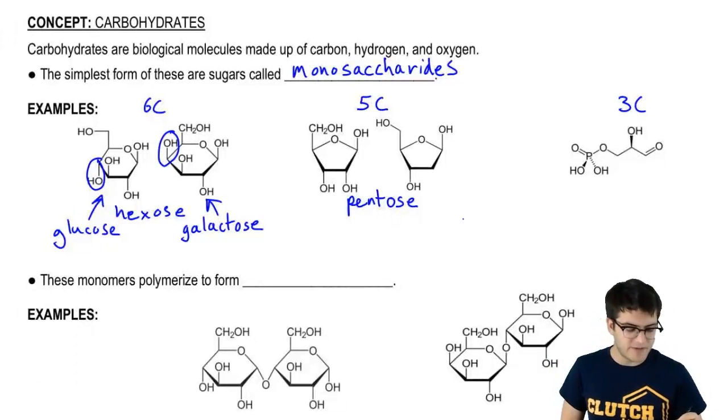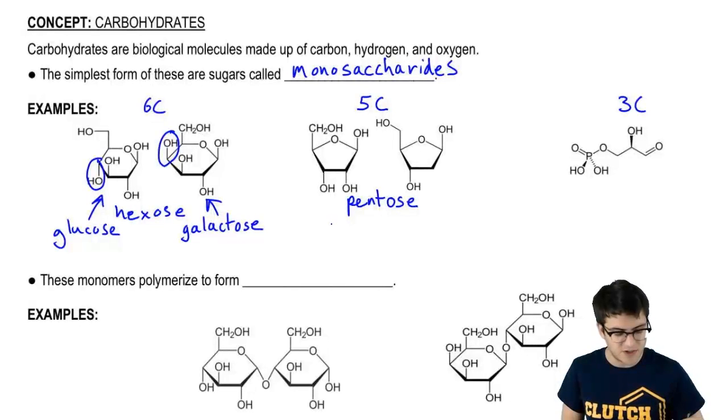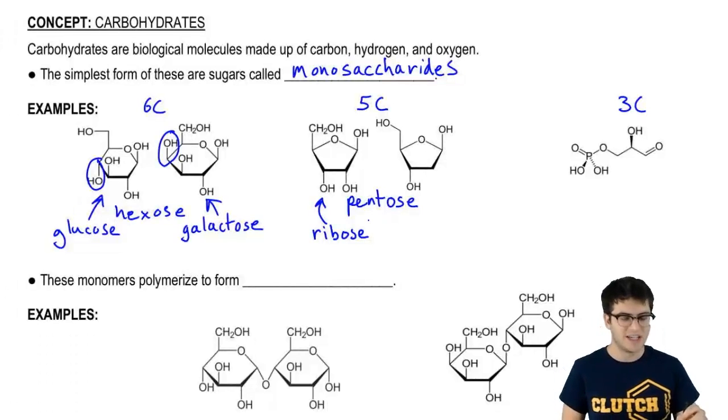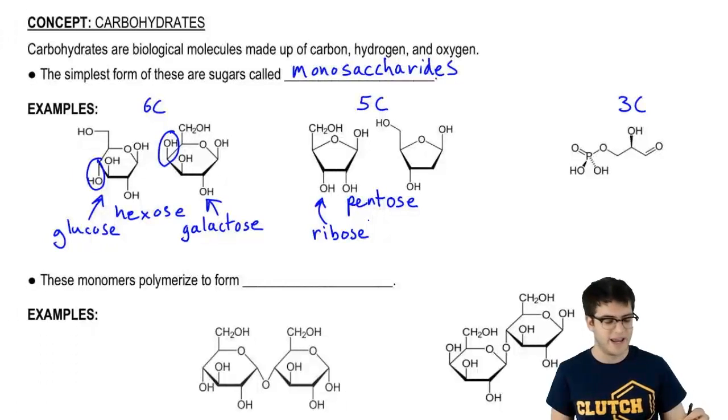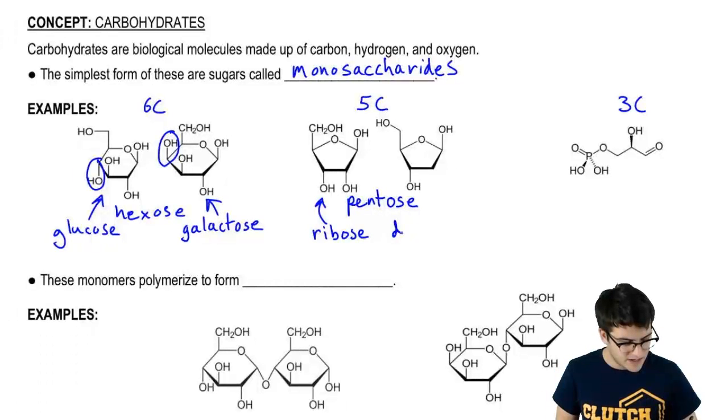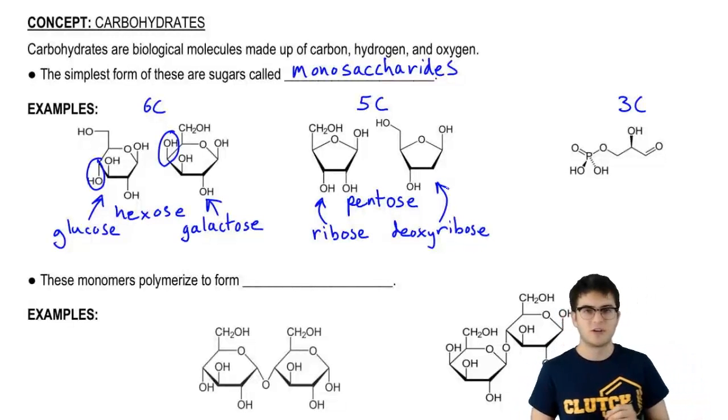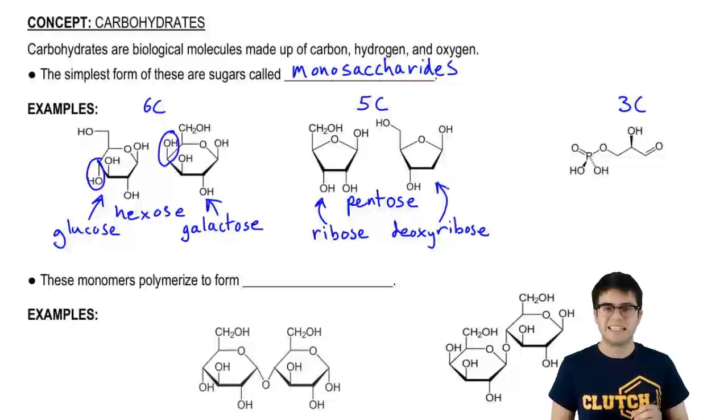These two five carbon sugars that I'm showing here, we're going to see come up when we talk about nucleic acids. This sugar right here is called ribose, and that's going to be the sugar we see in a molecule called RNA. Over here, we have deoxyribose, and deoxyribose is going to be the sugar in the molecule DNA.